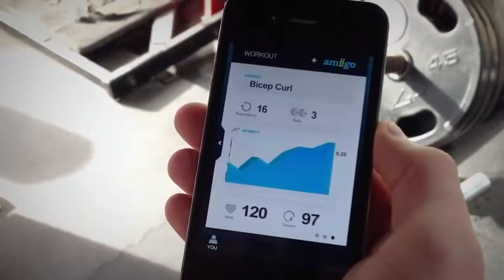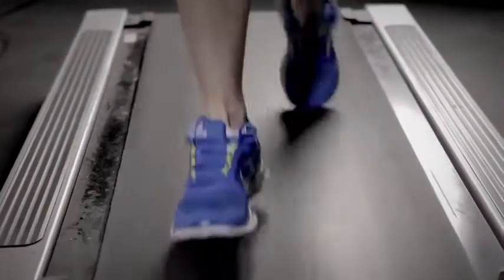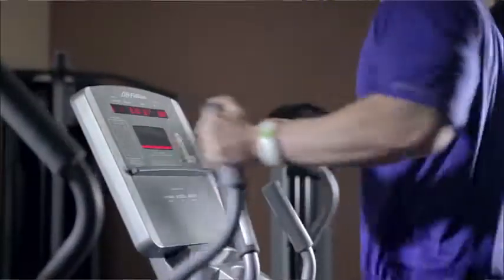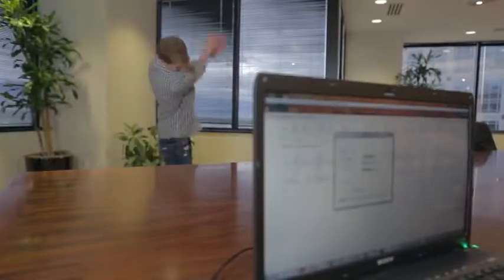So things like reps, sets, speed, and even intensity. The system can even differentiate between very similar activities, such as jogging on the treadmill versus the elliptical, or various types of bicep curls or golf swings.